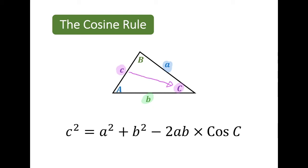When we're trying to find side c, we need to know the angle of capital C, which is opposite that missing side. If we don't have that information, we won't be able to use the cosine rule without finding out the missing information first.